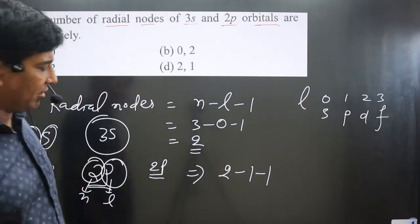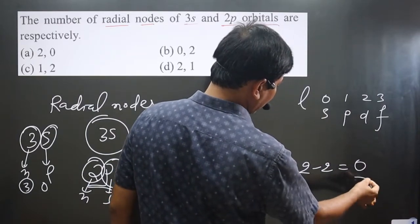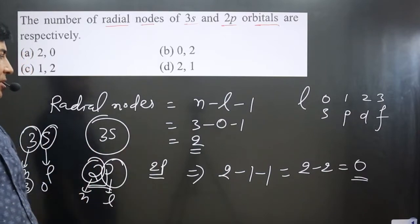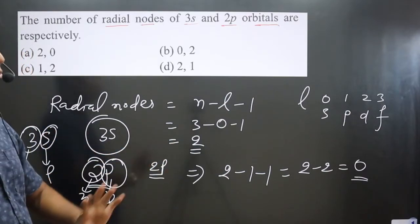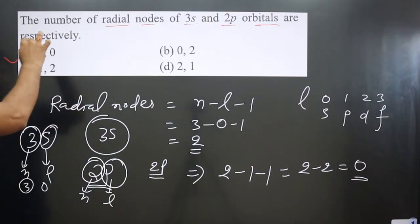So 2 minus 1 minus 1, we get 2 minus 2 equals 0. In case of 2p we have 0 radial nodes. In case of 3s we have 2 radial nodes. 2 and 0, we can see option (a) is correct. Remember the formula.